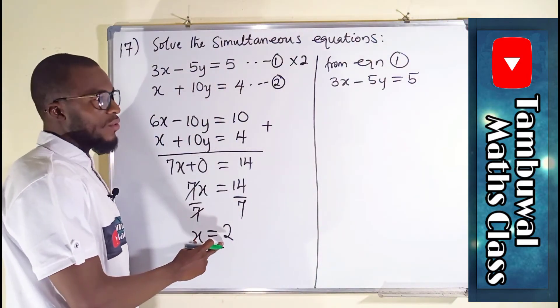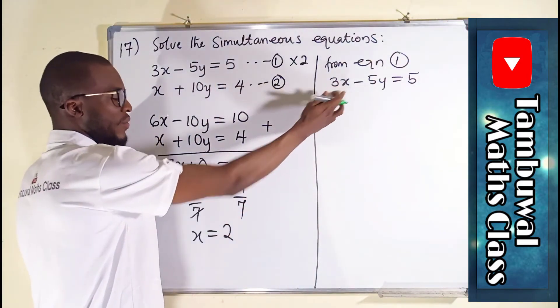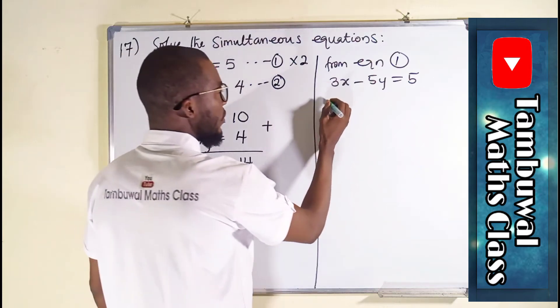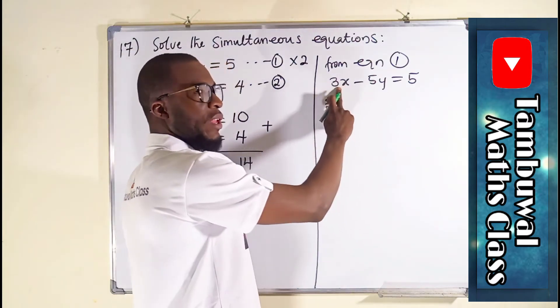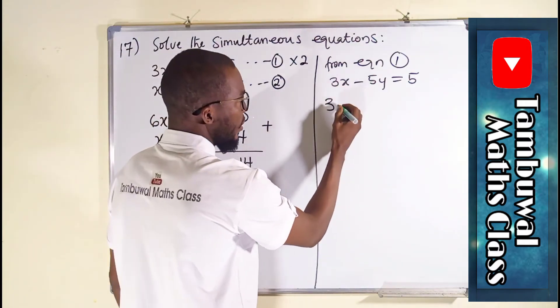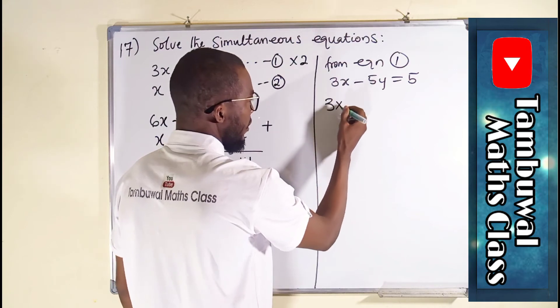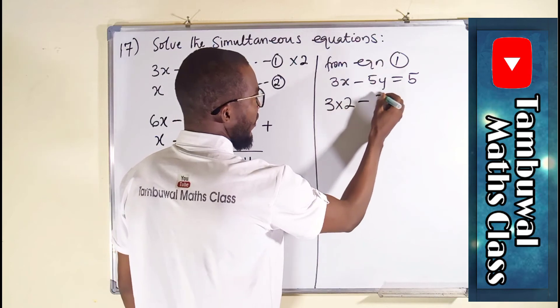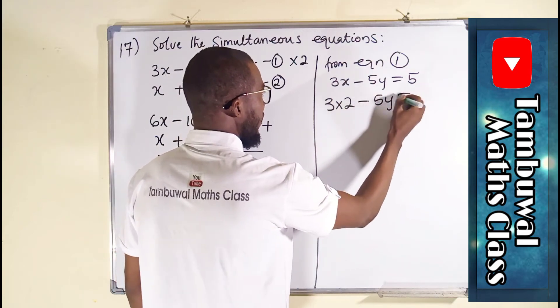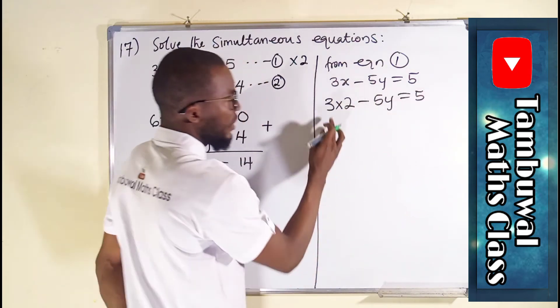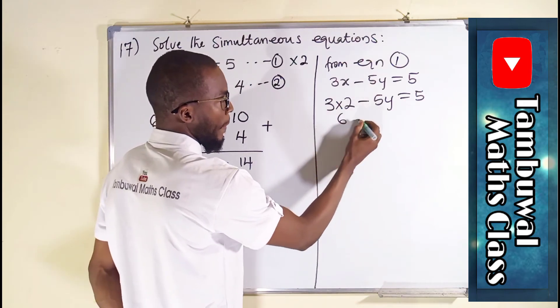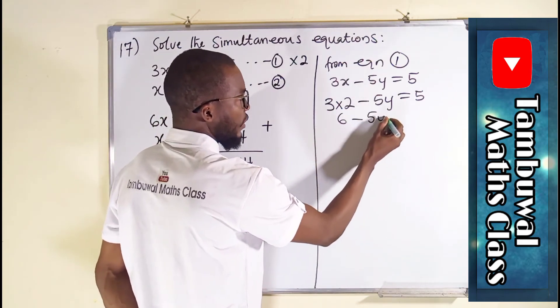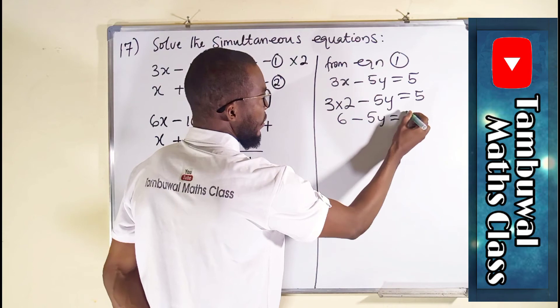you can see we have 3x minus 5y equals 5. But our value of x is 2. So wherever we have x, we replace it with 2. This is the relationship between x and 3 is multiplication. So we have to multiply 3 by x and our x is 2 minus 5y. The whole of this equals 5. This time this is 6 minus 5y equals 5.